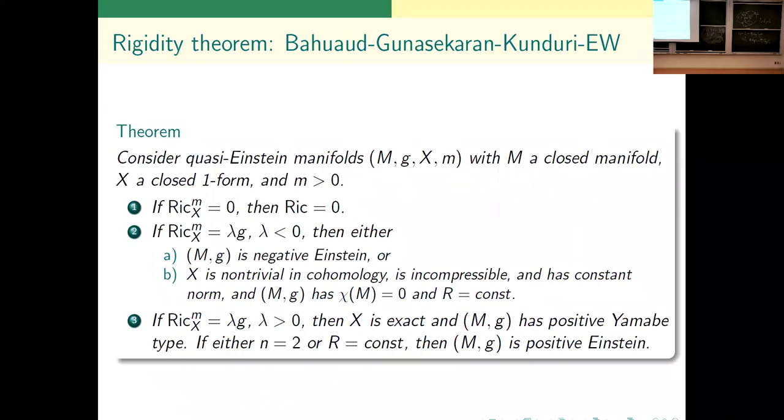The actual correct theorem is here. It turns out that this equation is still very, very special. It's elliptic, divergence form. You can apply maximum principle, and it's very near to rigid. You will get that if the Bakry-Emery Ricci doesn't descend to Ricci, so if you're not negative Einstein, then X has to be non-trivial in cohomology. So if you're in a simply connected manifold, you can't do this. It has to be incompressible, zero divergence, constant norm. This part's obvious - your non-vanishing vector field is constant norm unless it's zero. If it's zero you're Einstein clearly. And constant scalar curvature. So very close to rigid but not quite.